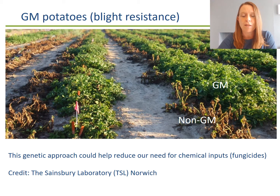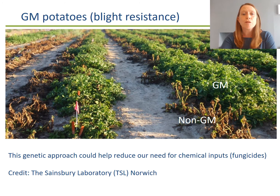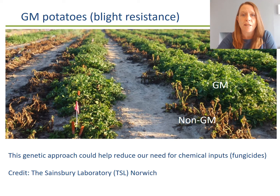Here we can see this in reality — this is a GM field trial. The green healthy plants are our GM variety; these contain a gene from wild potato that confers resistance to late potato blight. The dead row of plants is our non-GM line. Normally a farmer would prevent this sort of loss by the application of fungicides. This really demonstrates how plant breeding can be used to provide a genetic solution to help reduce our need for chemical inputs.